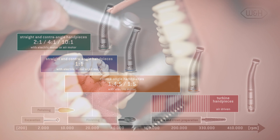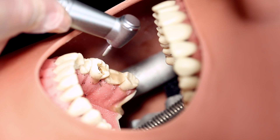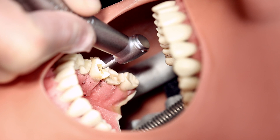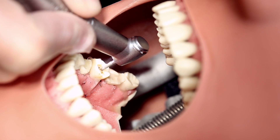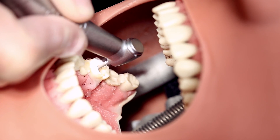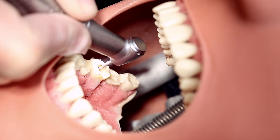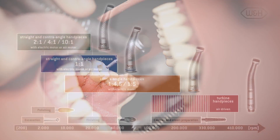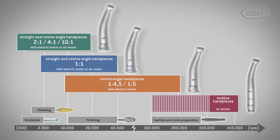At this operating speed, the removal rate of the instrument is at its highest, while simultaneously generating the lowest possible level of frictional heat. This is gentle for both the tooth and the rotary instrument. The speed of the different instruments ranges from 1,500 RPM for cavity excavation to 200,000 RPM for preparations.